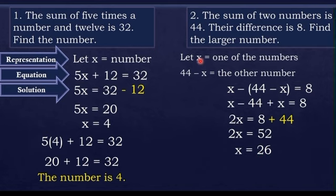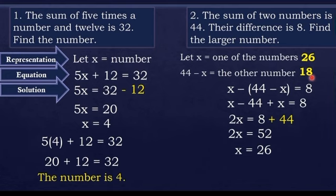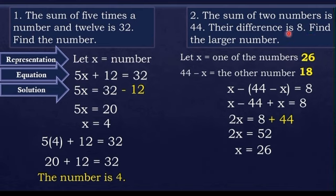Looking back at our representation: since x equals 26, and 44 minus x equals 44 minus 26, which is 18. Looking at the two numbers 26 and 18: 26 plus 18 equals 44, which confirms that the sum of the two numbers is 44, matching our original statement.